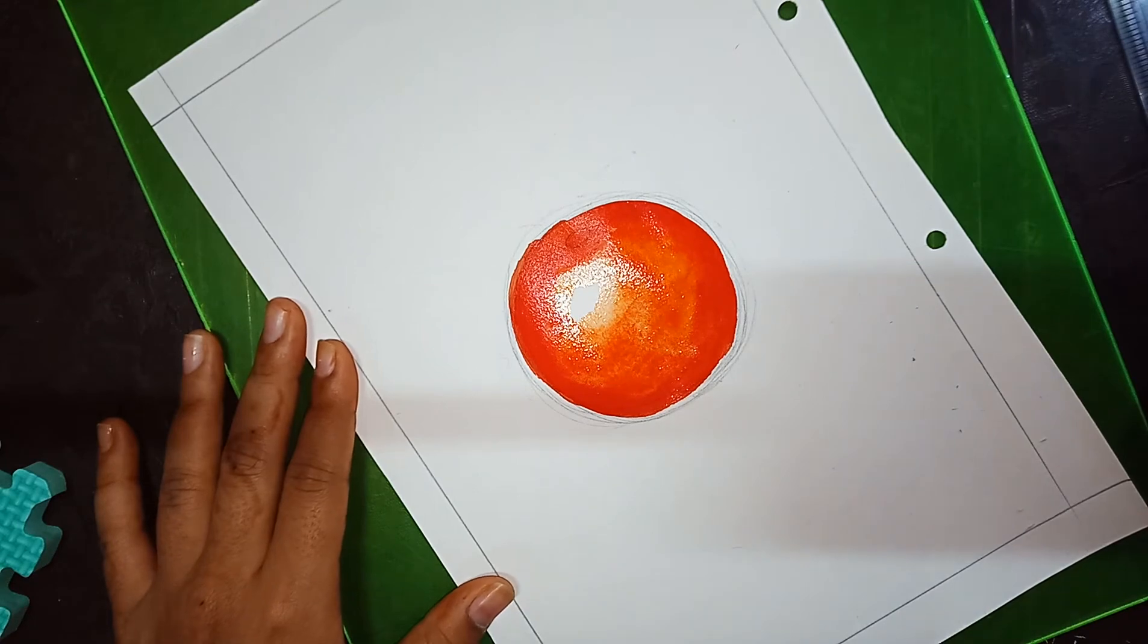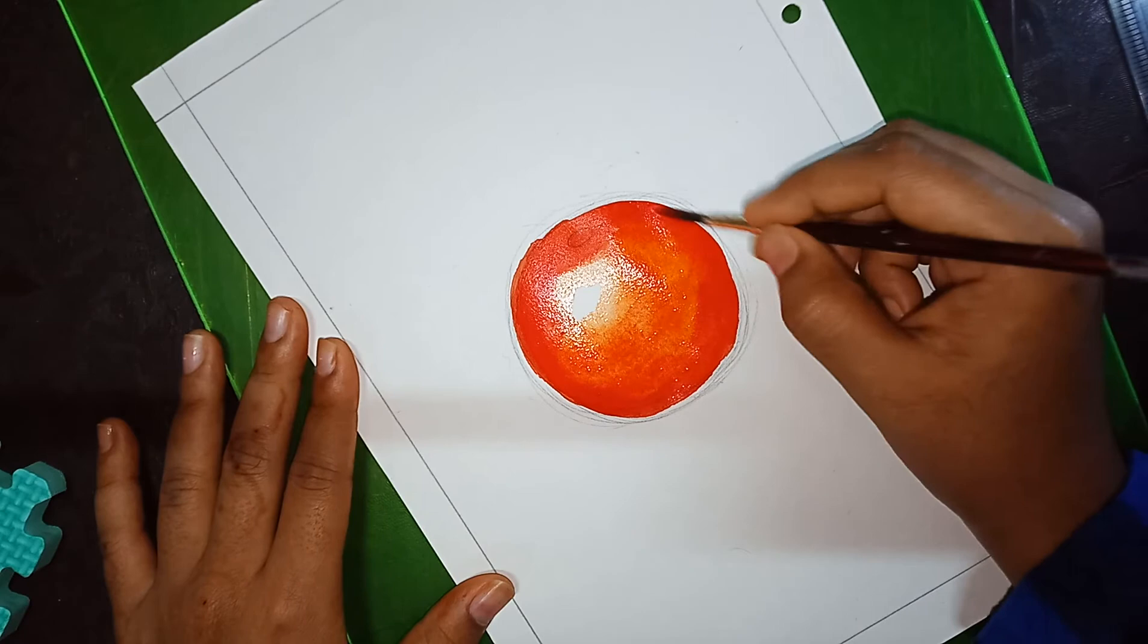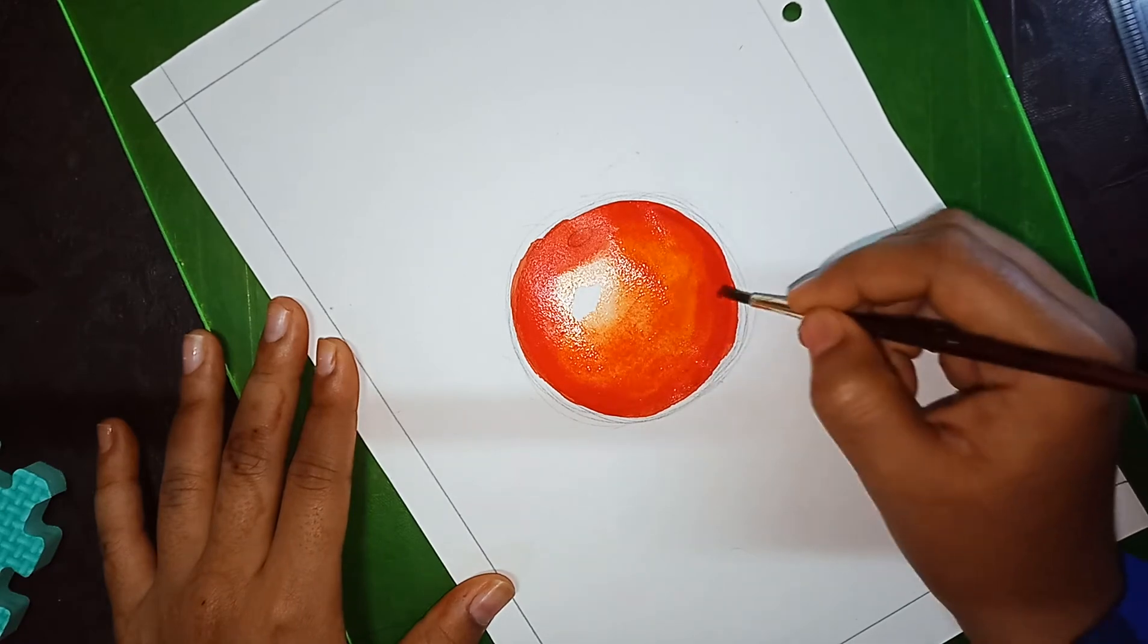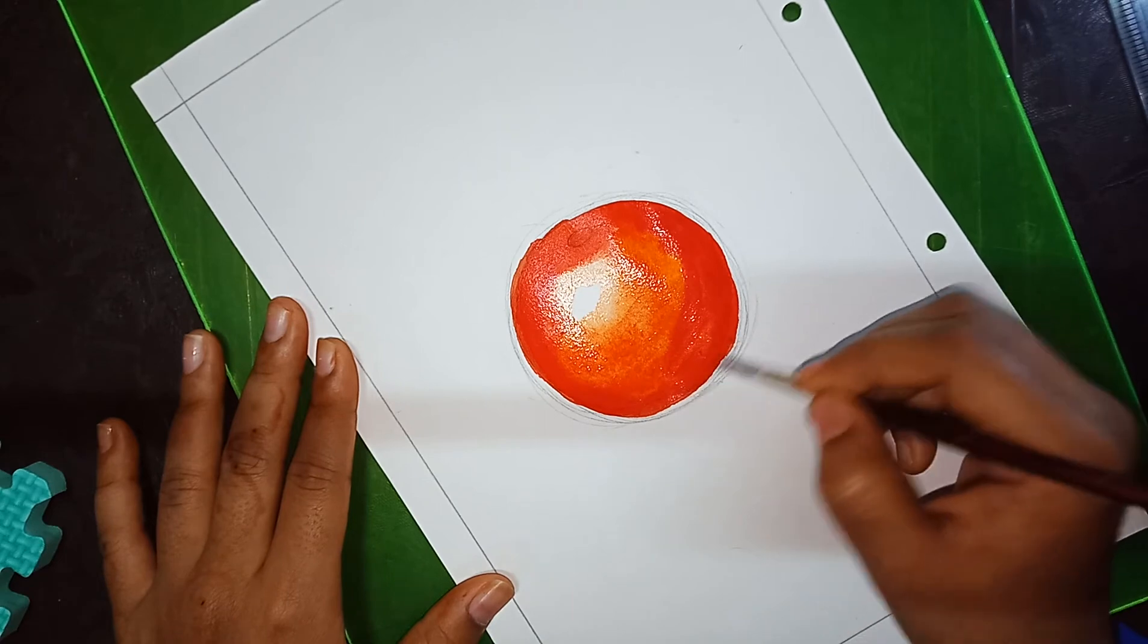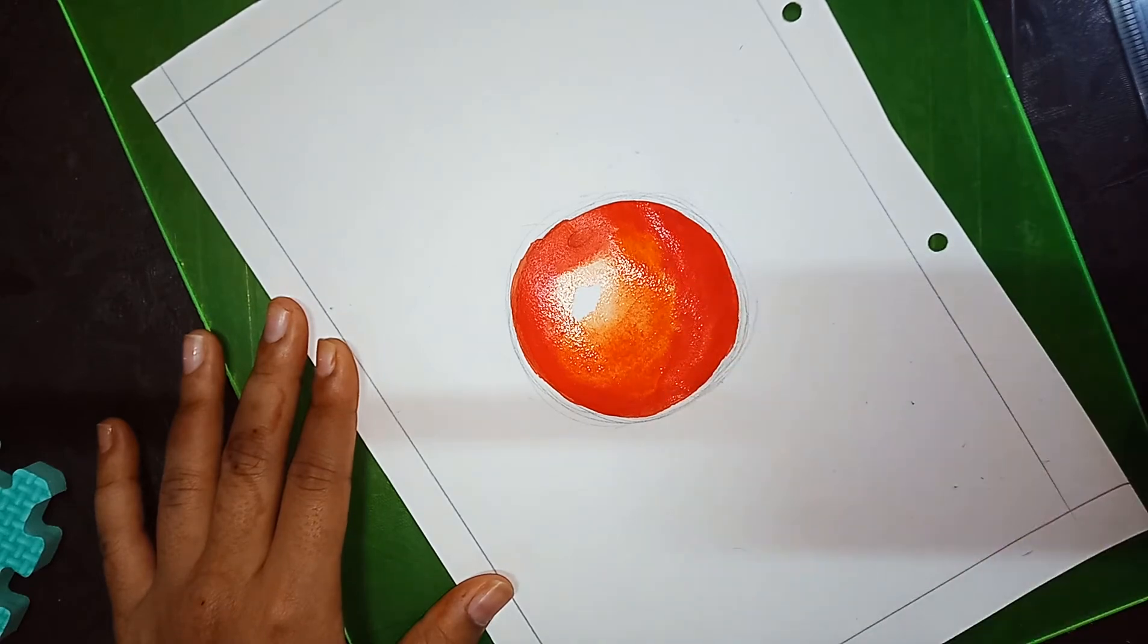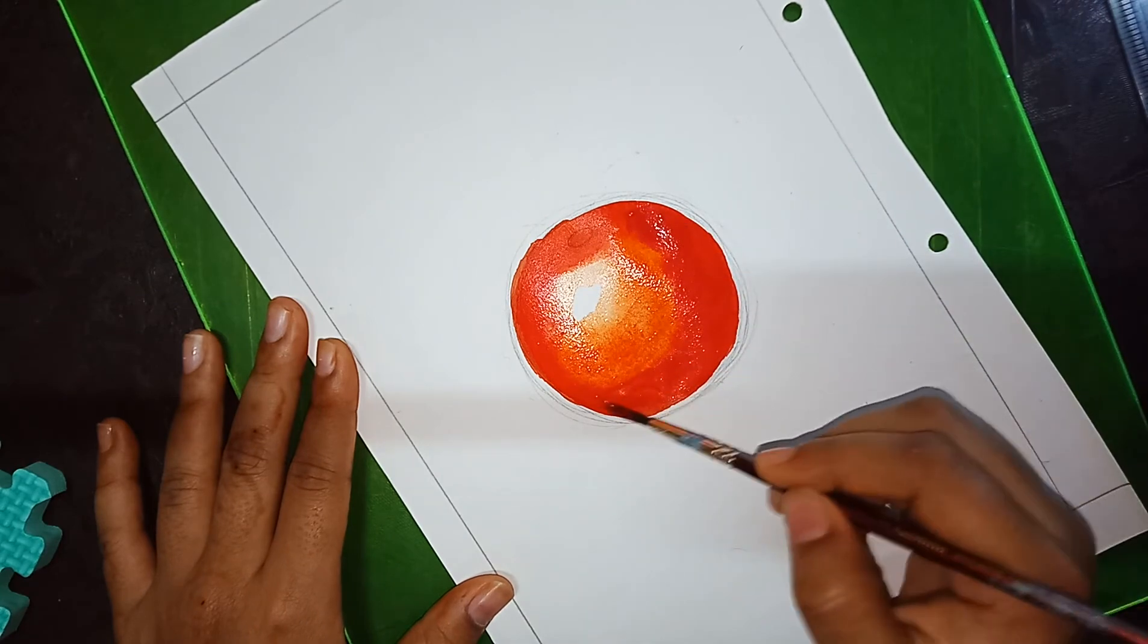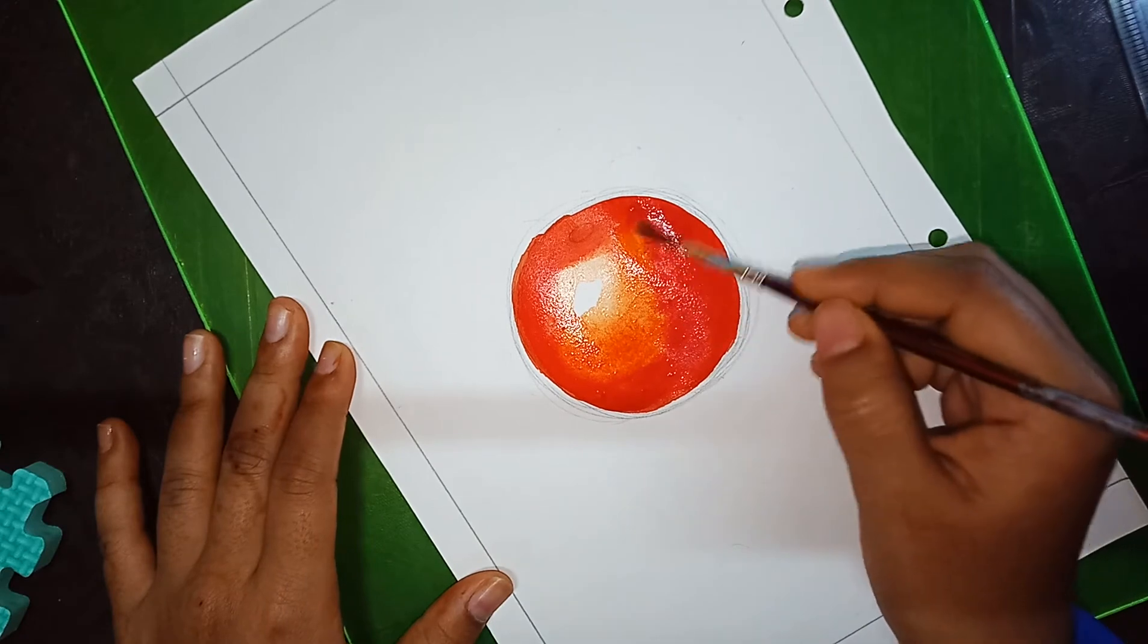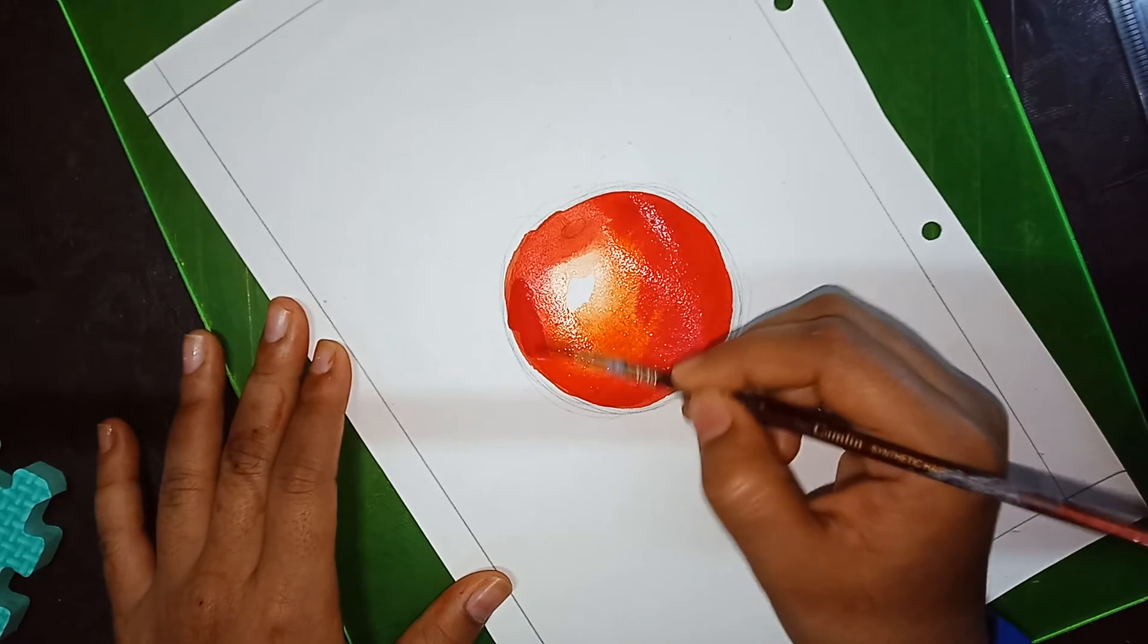After completing this, we are going to add crimson color at the edges. The tomato should be darkened at the edges because of shadow, as well as from this side.